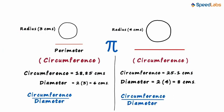If we calculate the value of circumference by diameter in the first case, we will approximately get it as 3.14. And guess what? In the second case too, we get the value of circumference by diameter as approximately 3.14.